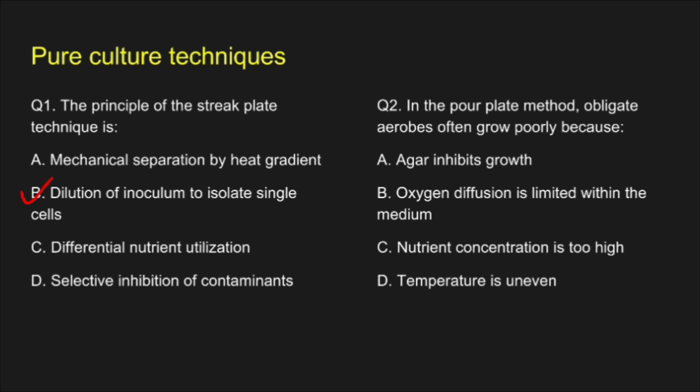Question 2. In a pour plate method, obligate aerobes often grow poorly because — A. Agar inhibits growth, B. Oxygen diffusion is limited within the medium, C. Nutrient concentration is too high, D. Temperature is uneven. The correct answer is option B: Oxygen diffusion is limited within the medium.